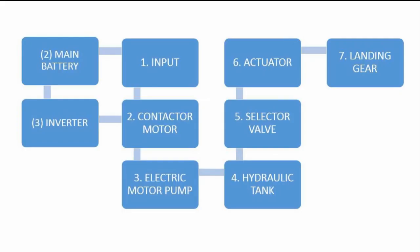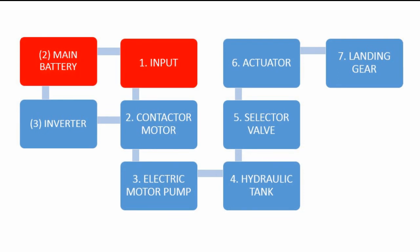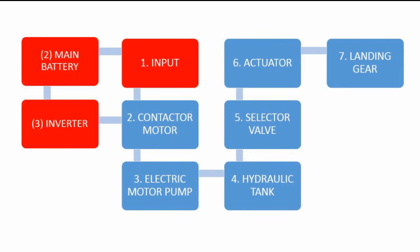The following direction flow is for the landing gear operating system. First of all, the input from the cockpit to the switch will allow AC current from the main battery to flow to the inverter. The inverter will convert the AC to direct current.